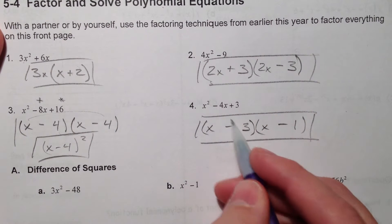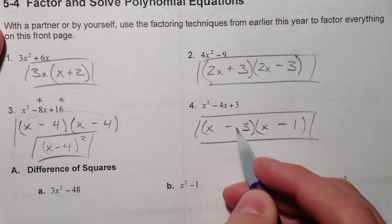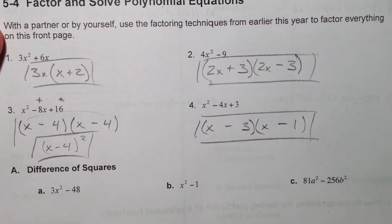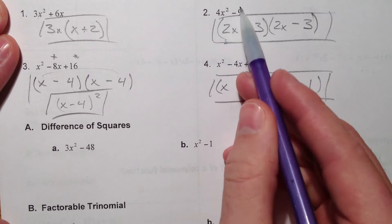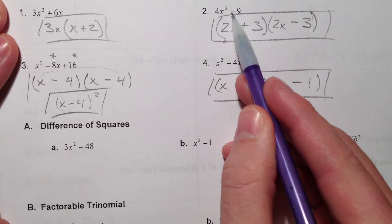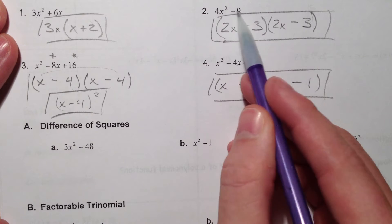What multiplies to 3? 3 and 1. What adds to negative 4? So it's got to be a negative 3 and a negative 1. Alright, so the first kind we're going to talk about is the difference of squares. That's what this one was up here. Difference meaning subtraction, squares meaning perfect squares.